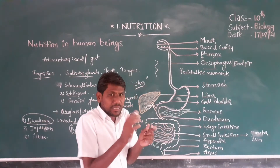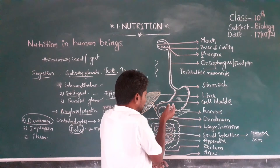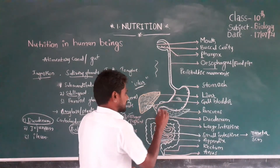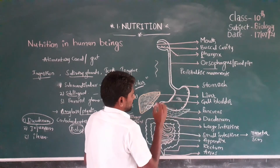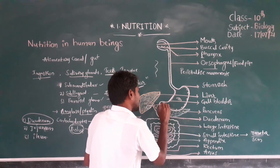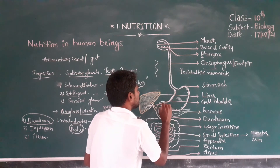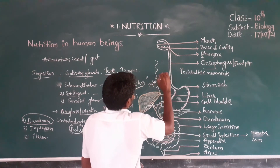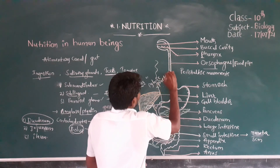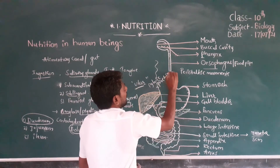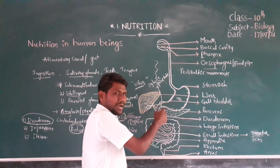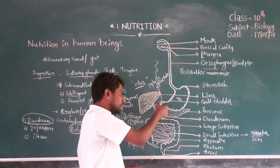At the end of the stomach there is a structure called the pyloric sphincter. The function of the pyloric sphincter is that it allows food particles in small quantities into the intestine — the duodenum.